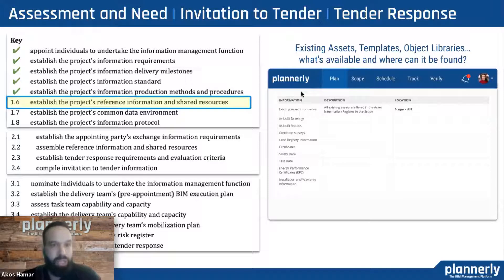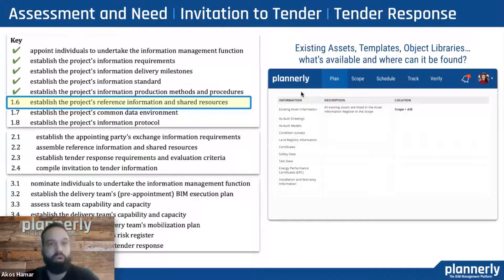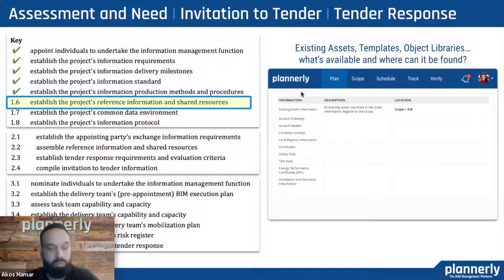The next one: establishing the project's reference information and shared resources. So did we ever work on any similar deliverables before? How did it work for us? How did we create those deliverables? How did they look? Can we share it with others? And also, we have to — during the project — record the lessons learned and incorporate those lessons learned into the next project, so we can avoid any issues that we might have run into on previous projects.